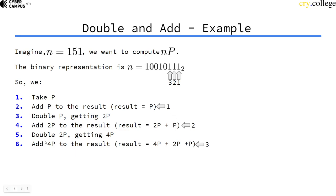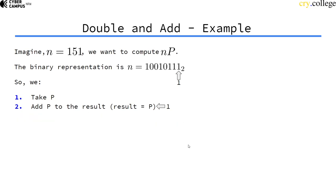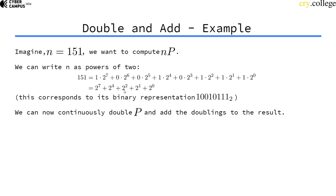Then we double 2P again, we get 4P, and we check, okay 4P is actually in the result so we add 4P to the result. So the result is now 4P plus 2P plus P. You probably see a pattern here because this is 4, this is 2, this is 1.